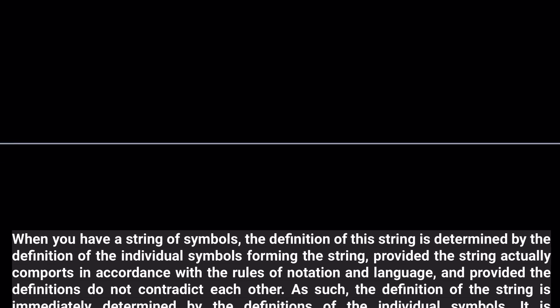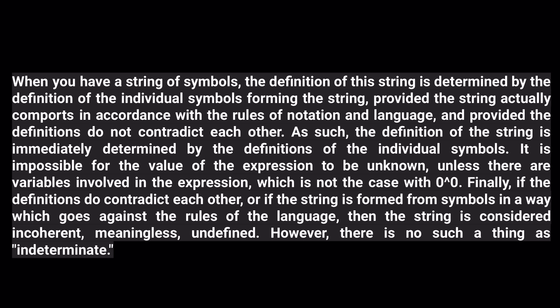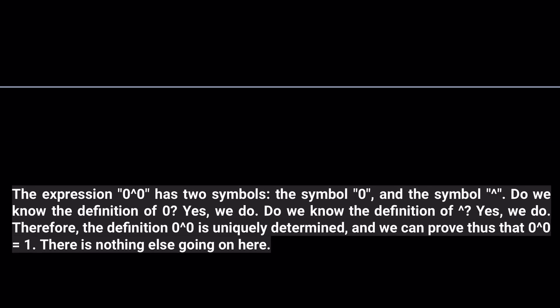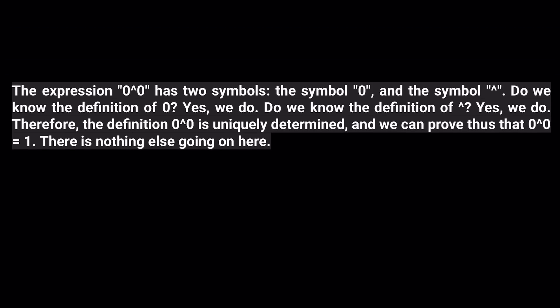When you have a string of symbols, the definition is determined by the definition of each individual symbol, and they shouldn't contradict each other. We know two symbols here: zero and the exponentiation symbol, and we know the definition of both. Thanks to Angel Mendez for this explanation — zero to the power zero is uniquely determined, and it can be proven that 0^0 = 1.